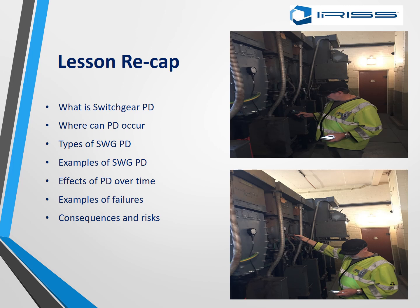A quick lesson recap: we have learned what switchgear partial discharge is, where partial discharge can occur — at joints, in bubbles, and in voids — and the types of switchgear partial discharge. We have seen images of partial discharge, discussed the effects over time going from corona through to tracking through to arcing, and shown examples of failure along with the consequences and risks of not carrying out partial discharge testing.